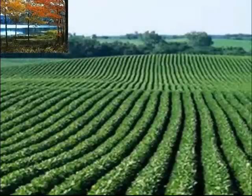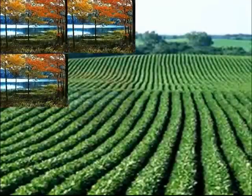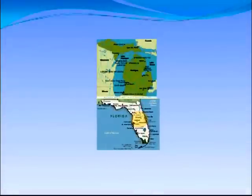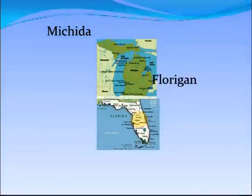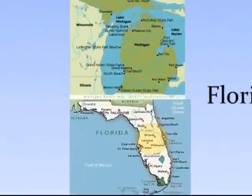Now, this might sound odd because apples are a temperate fruit and oranges grow in tropical climates. How is that possible? Are we considering some kind of melding of Michigan and Florida — maybe we're talking about Mishida or Florigan? Okay, let's get back to the economics of it.